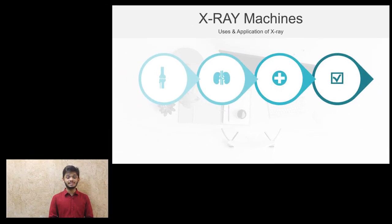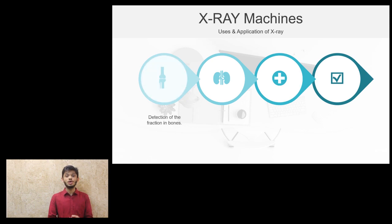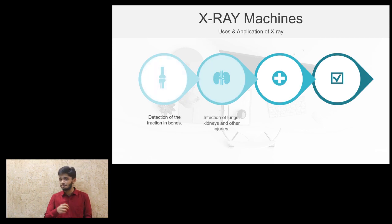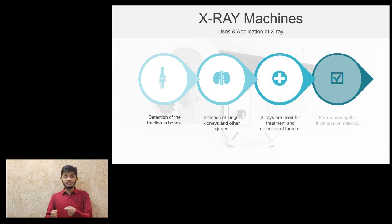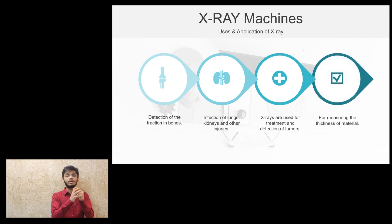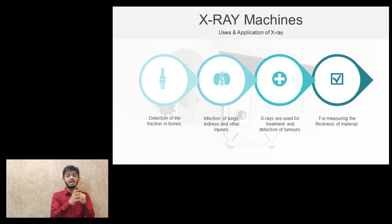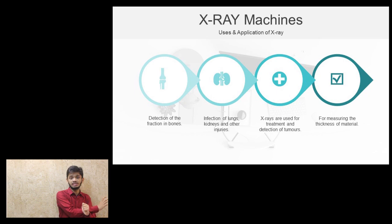So now let's look at some applications of X-rays. X-rays are used to detect fractures in bones, to detect injuries and infections in various parts of the body, to treat tumours, and to measure the thickness of various materials. This is done by placing the object or body whose treatment or detection has to be performed midway between the X-rays and the fluorescent screen.